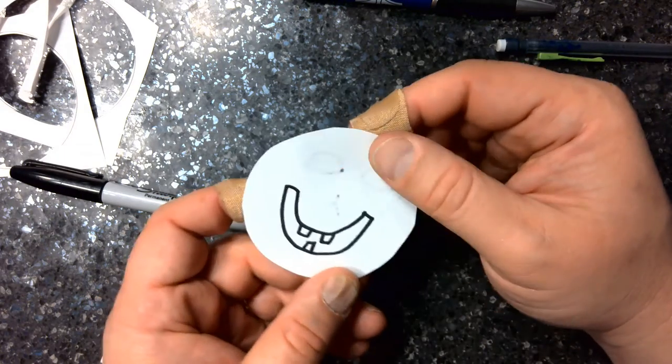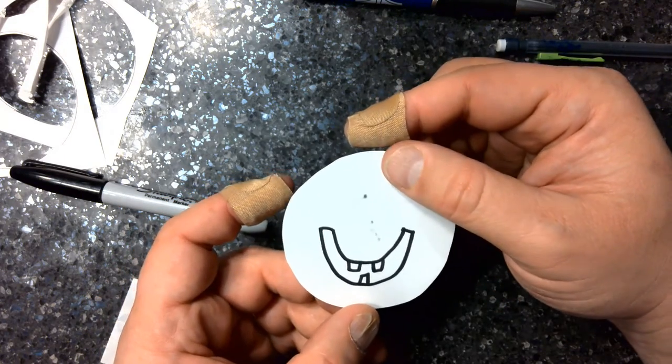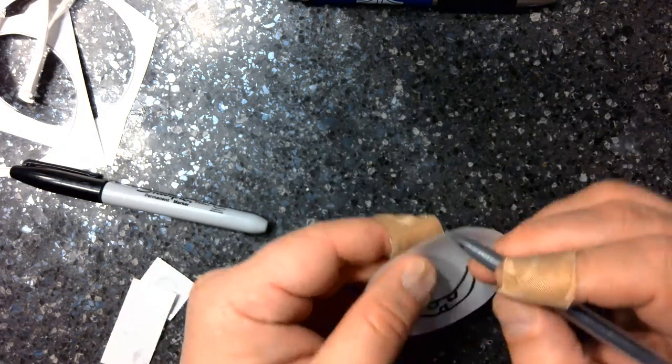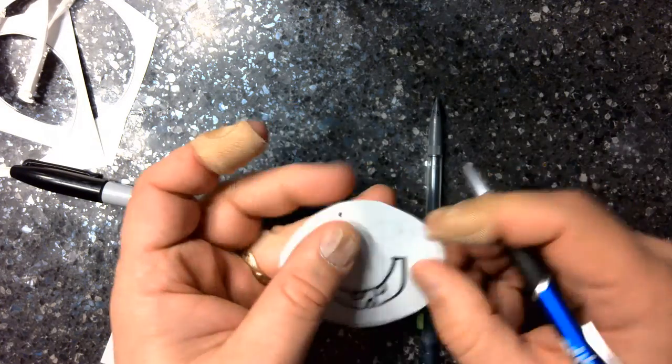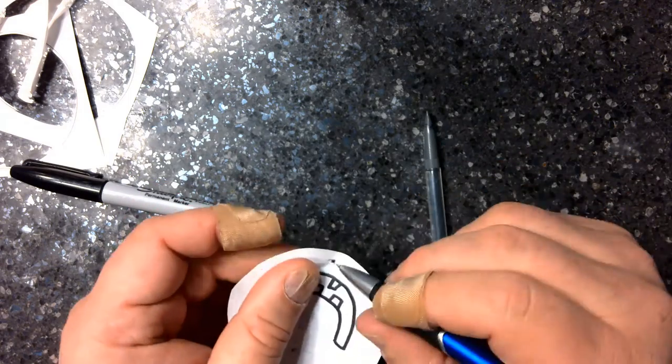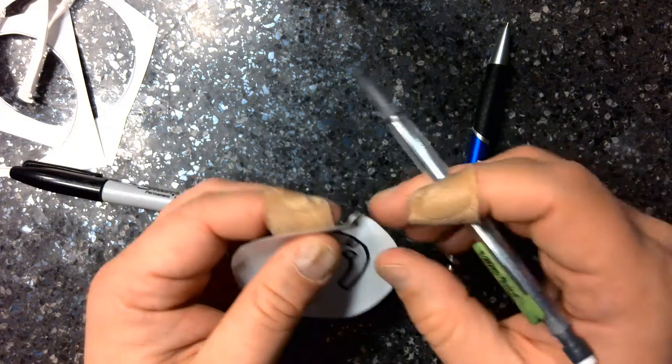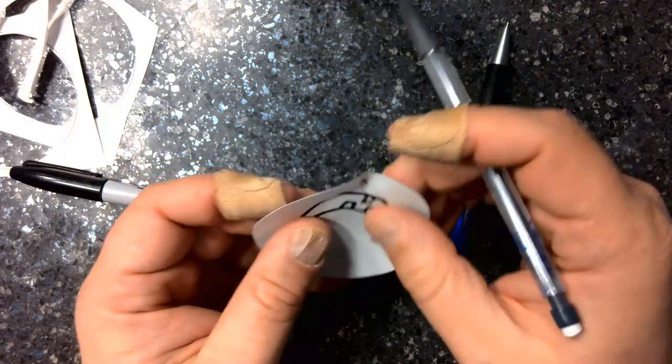Decide which way you want your Thaumatrope to spin and punch two holes on opposite sides of your paper. Try not to punch through your image.